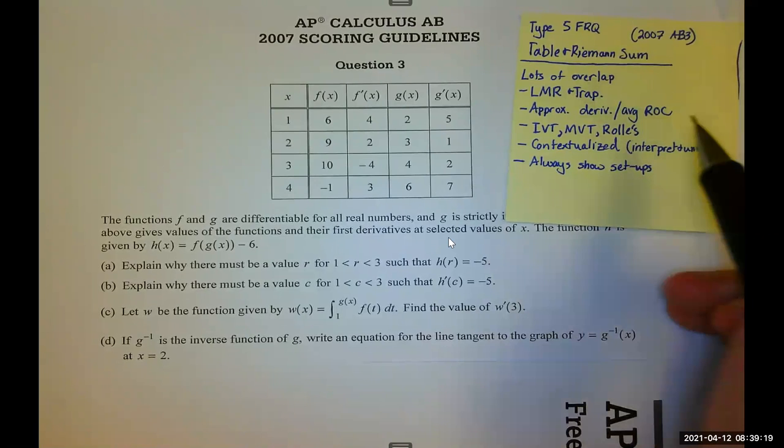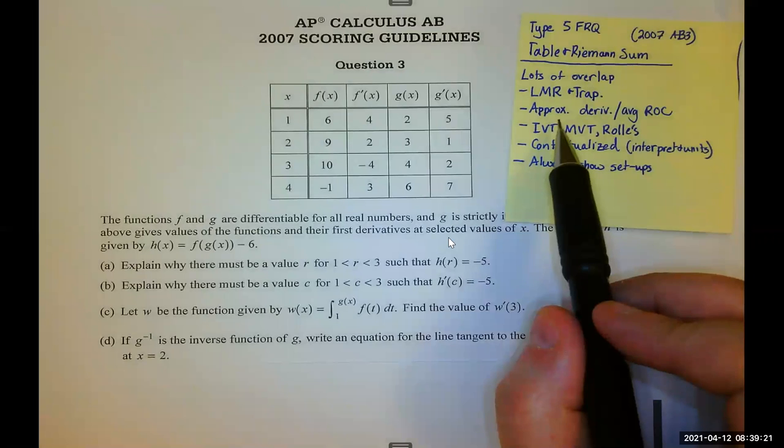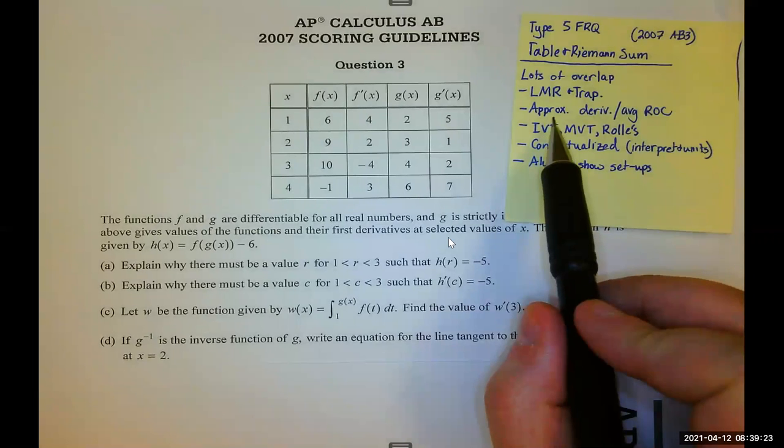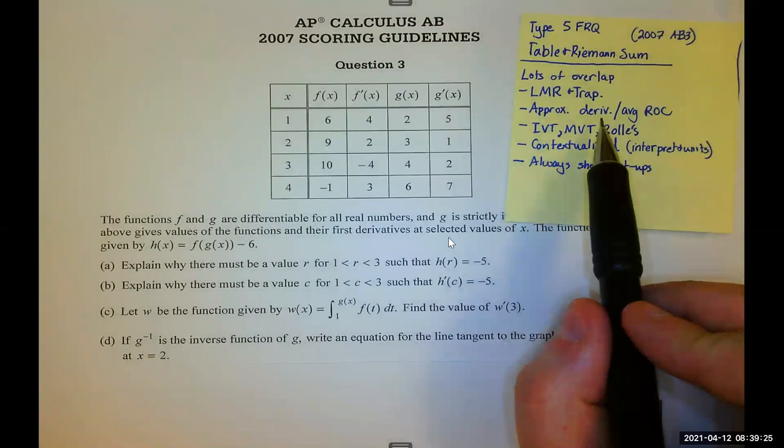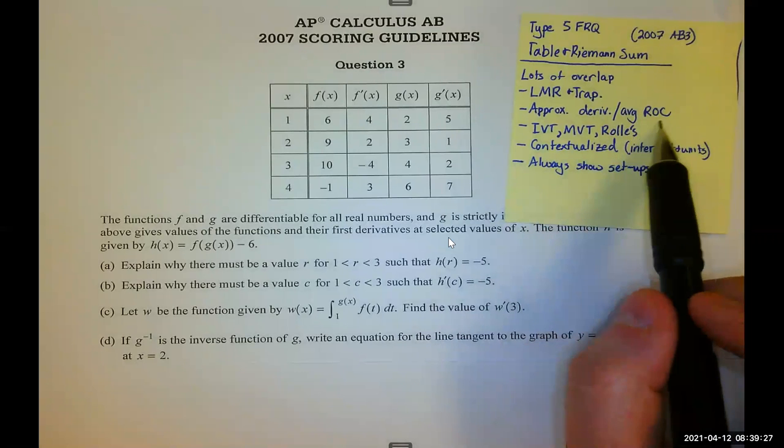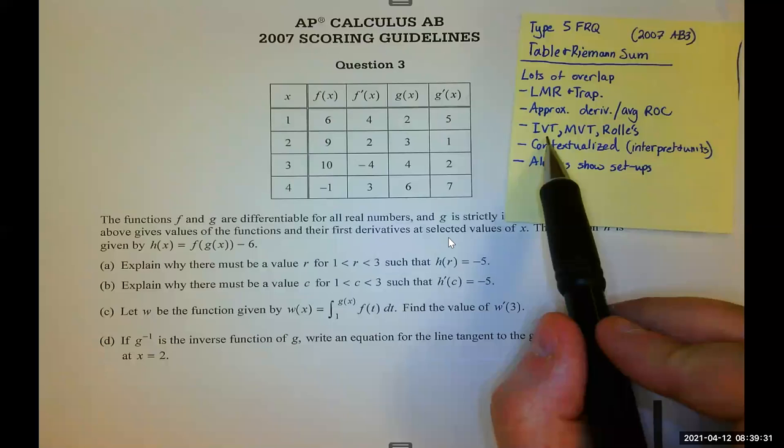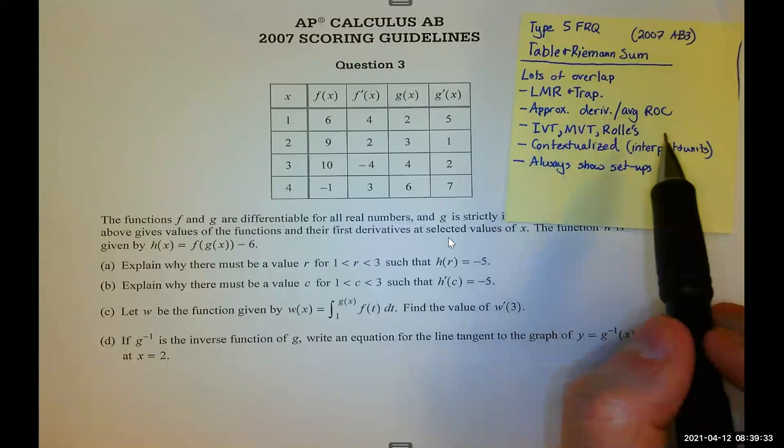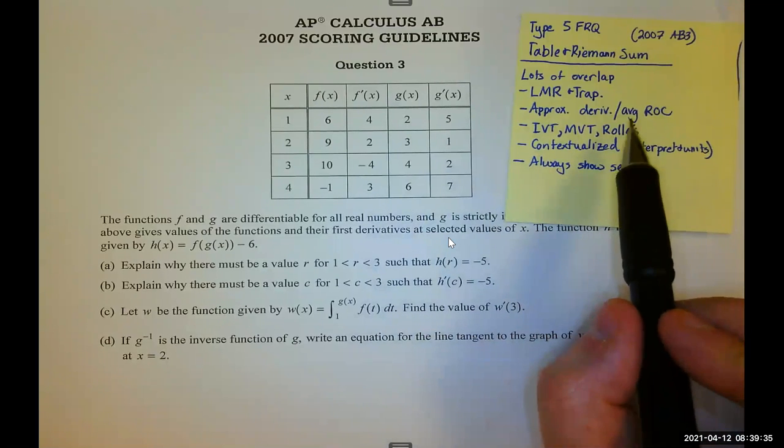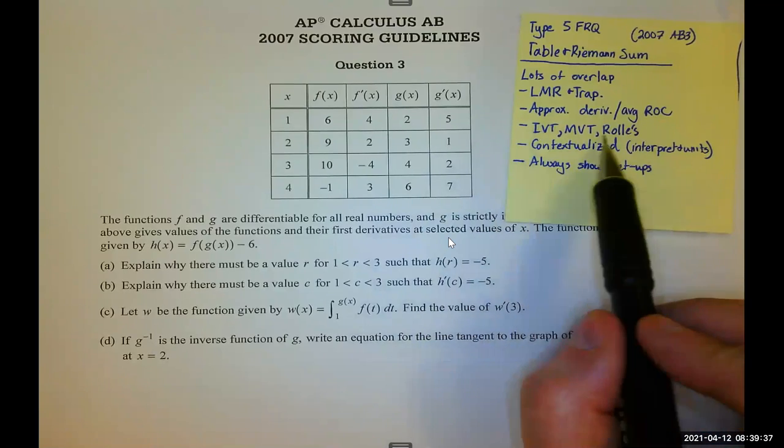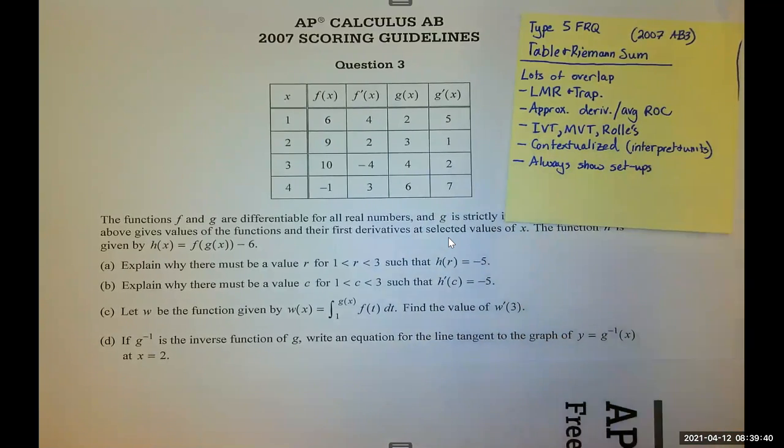So any kind of approximation question can happen with a table. You may have to do a derivative approximated as a rate of change, for example. A lot of times, you'll have intermediate value theorem or mean value theorem or Rolle's theorems with tables. Again, these are not restricted to table questions, but you do need to know how to do these with table questions.